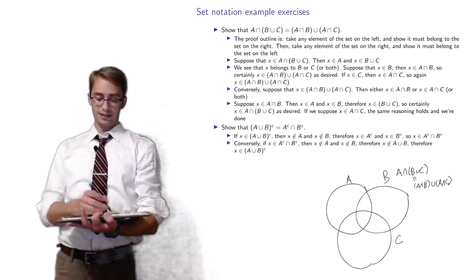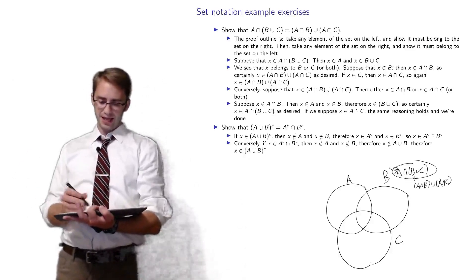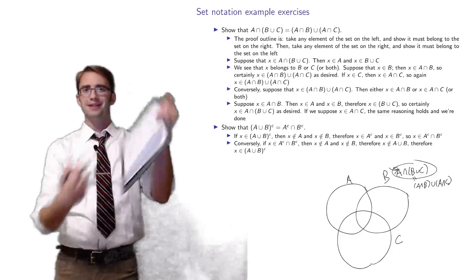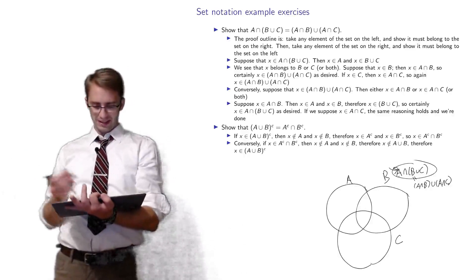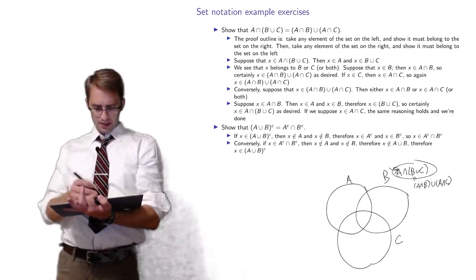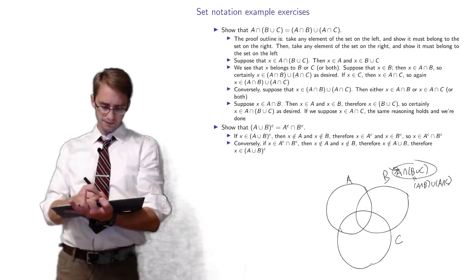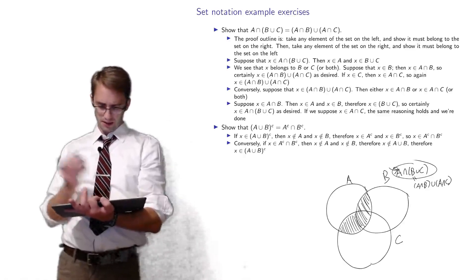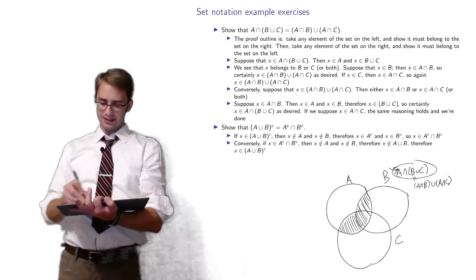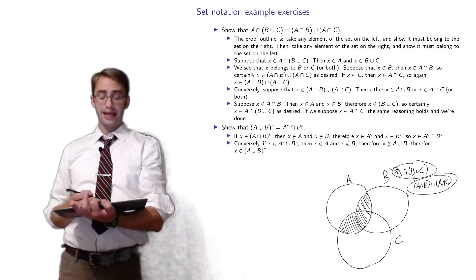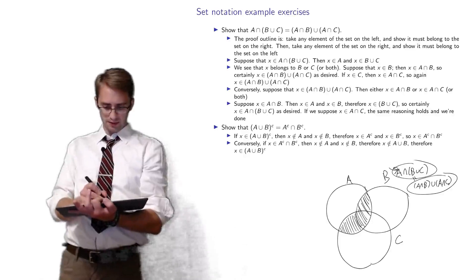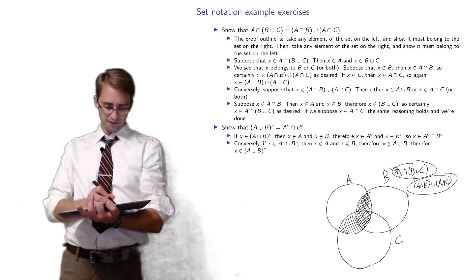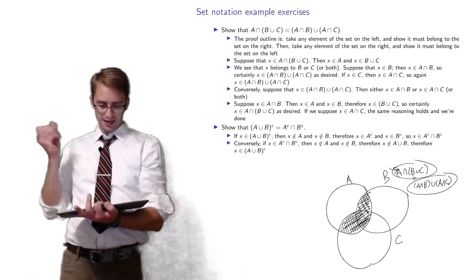A intersect (B union C) is everything in A that also has to be in B or C — that shaded region. Then A intersect B is all the overlap between A and B, and A intersect C is all the overlap between A and C, hatching in the other direction. When you merge those two regions together, they're the same as the first — the two sides of the distributive identity are equal.